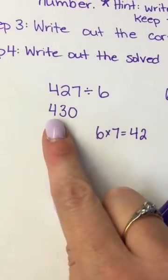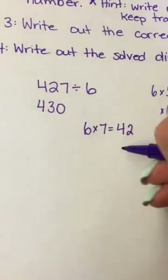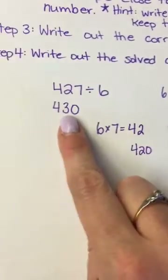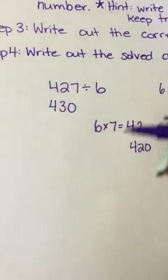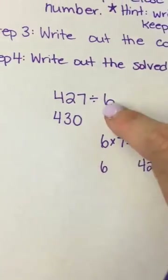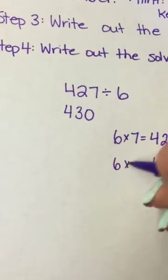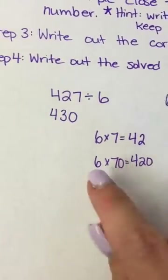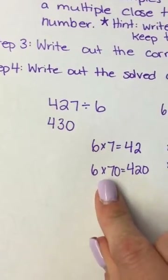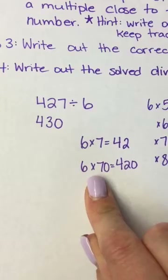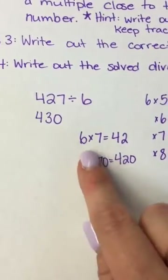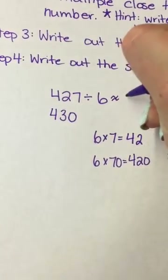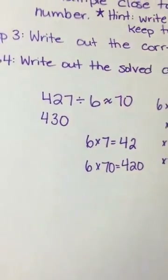42 isn't very far from 43, but if I make it 420 by adding a zero, that's very close to 430. So I keep the 6 from up top, times 70 — because if I add one zero to the answer, I must add one zero to one of my factors. So 427 divided by 6 is equal to approximately 70.